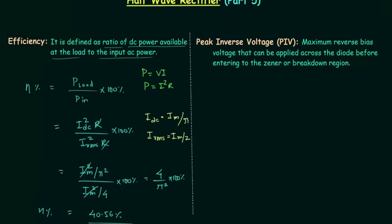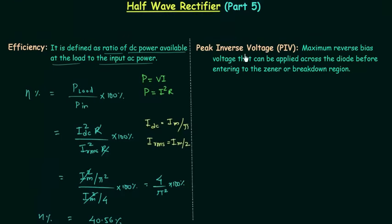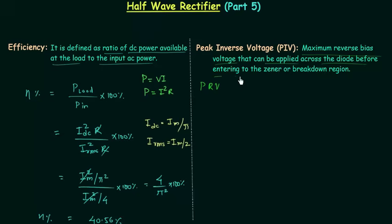Now we will move to the peak inverse voltage. Peak inverse voltage is also called peak reverse voltage, PRV, where P stands for peak, R stands for reverse, and V stands for voltage. The maximum reverse bias voltage that we can apply across the diode before entering the zener or breakdown region is called the peak inverse voltage.